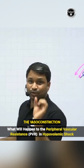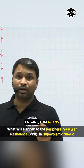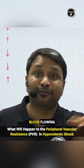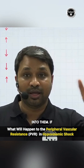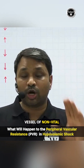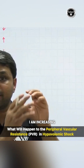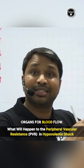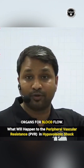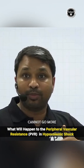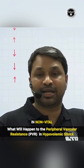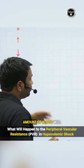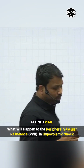When vasoconstriction of non-vital organs occurs, that means resistance for blood flowing into them is increased. If the blood vessels of non-vital organs are made smaller, blood will not flow easily into them — resistance increases in non-vital organs, and ultimately more blood goes into the vital organs.